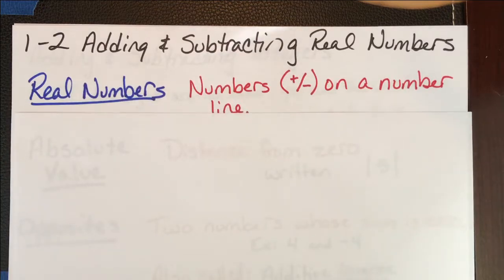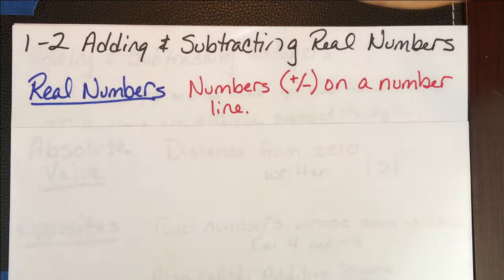Real numbers, because we're starting with vocabulary, are all of the positive and negative numbers that you find on a number line. Real numbers as opposed to imaginary numbers, which is when you divide a negative number in half and you get two halves of a negative, which are imaginary. It's a long story, and you don't have to care.